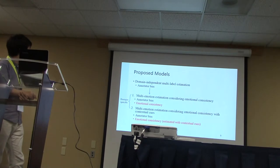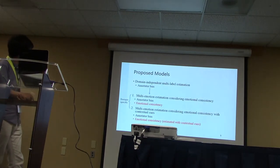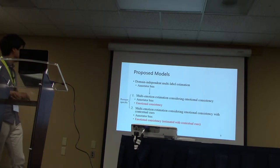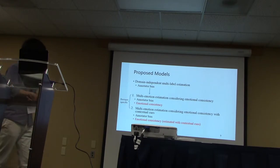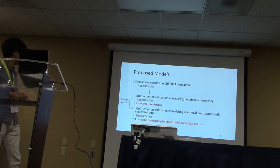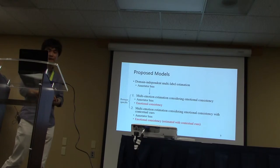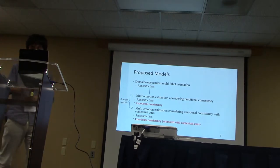Our work is based on the domain-independent multi-label estimation model, which only considers the annotator bias. We propose two domain-specific models for multi-emotion estimation. The first model considers not only the annotator bias but also the annotation consistency. The second model extends the first model by estimating the emotional consistency with contextual cues. First, I'll briefly introduce the domain-independent multi-label estimation model.